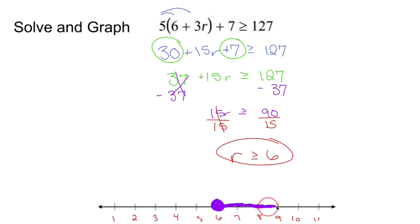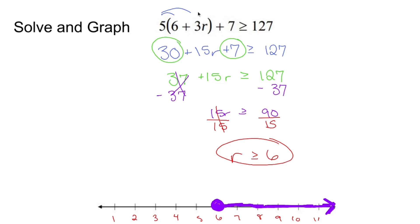Since 6 counts and everything greater than that counts, shade everything to the right. What this purple line represents is any number — 9, 11, a billion — if I take that number and plug it into the original r, this would be a true statement: whatever number I get would be greater than or equal to 127. That's a multi-step inequality with its graph.